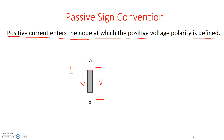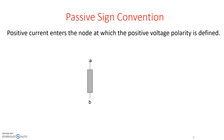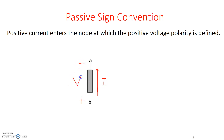Now let's do the opposite. Let's say we start with this element and define that the current is flowing in a particular direction first. We first define the direction of the current flow. Now we need to figure out which way the polarity of the voltage is. Passive sign convention says that current always flows from the positive voltage terminal and exits on the negative voltage terminal — so that becomes the polarity of the voltage.